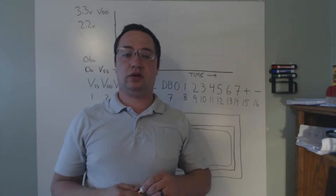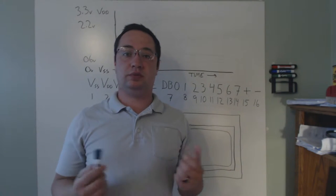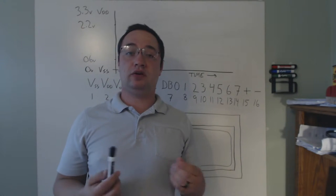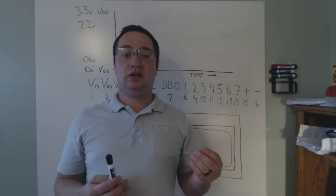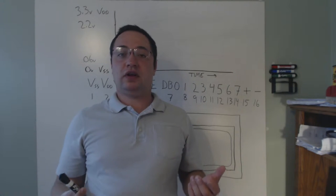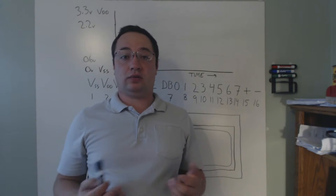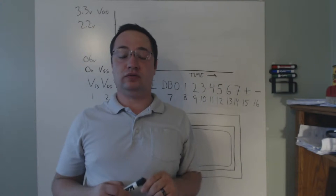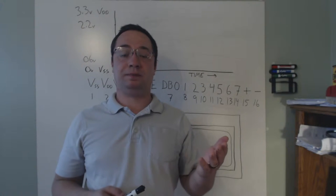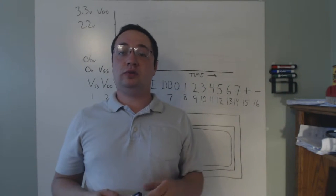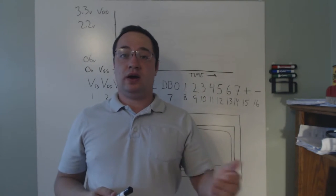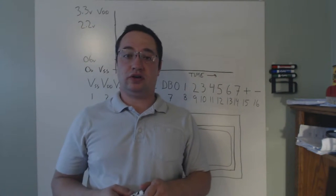Digital communication represents bits of data using zeros and ones. In reality there is really no such thing as digital — everything is analog, meaning there's some variation in voltages and levels — so digital communication is really an approximation. So how does digital communication work?